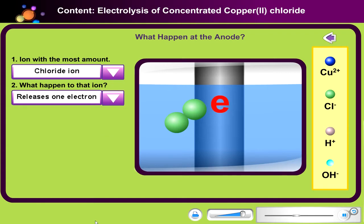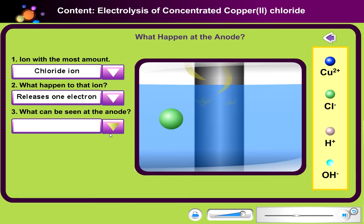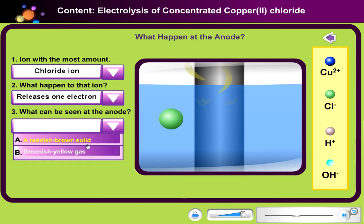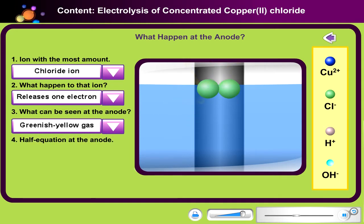Each chloride ion releases one electron to form a chlorine atom. Since chlorine atom is not stable on its own, two chlorine atoms will combine to form a chlorine molecule. What can be seen at the anode? Click the drop-down menu to select your answer. A pale green-yellow gas evolves at the anode. What is the half equation at the anode? Click the drop-down menu to select your answer.